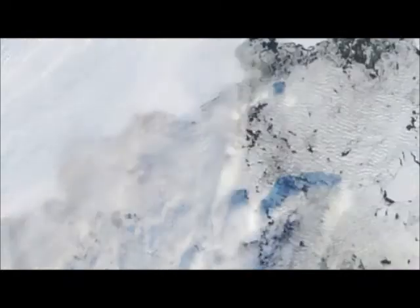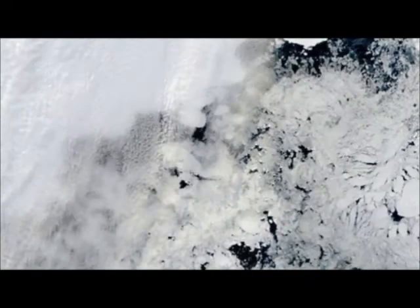Evidence of the separation was first observed in images captured by NASA's Aqua and Terra satellites. Looking through a hole in the clouds, researchers spotted a single iceberg roughly the size of Manhattan drifting off the coast of the ice shelf.